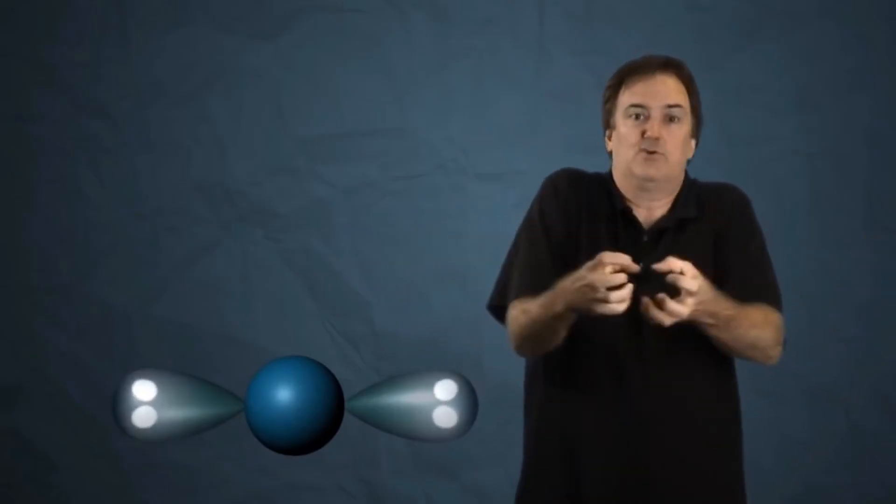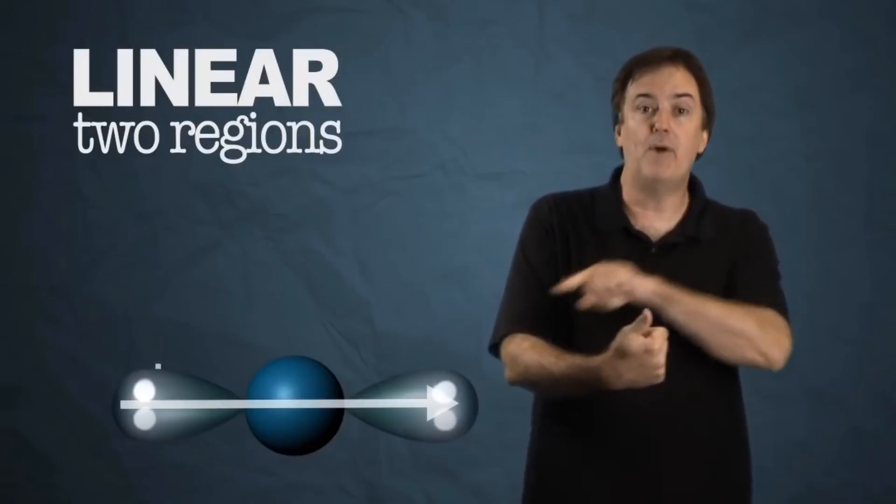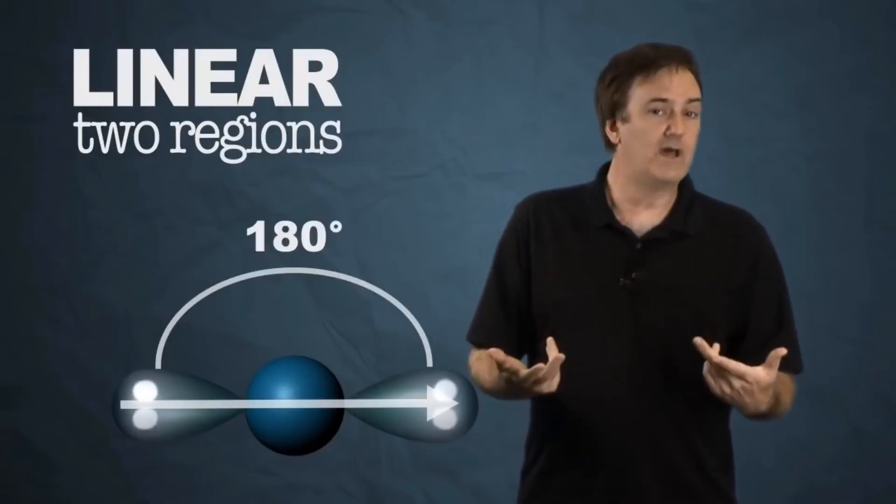This leads to distinct molecular shapes. And the easiest one is two regions. If you only have one atom on one side and one on the other, and they try to get away from each other, you get a fairly linear type molecule. Two regions gives you linear shape. The bond angle is 180 degrees.